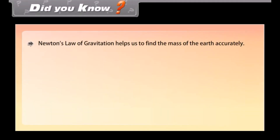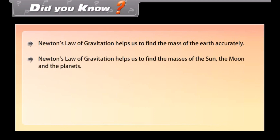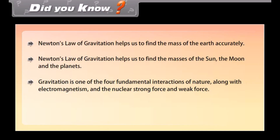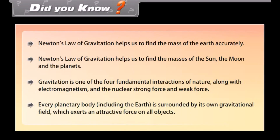Did you know? Newton's law of gravitation helps us find the mass of the earth accurately, as well as the masses of the Sun, the Moon, and the planets. Gravitation is one of the four fundamental interactions of nature, along with electromagnetism, the nuclear strong force, and the weak force. Every planetary body, including the earth, is surrounded by its own gravitational field which exerts an attractive force on all objects.